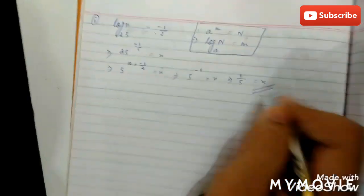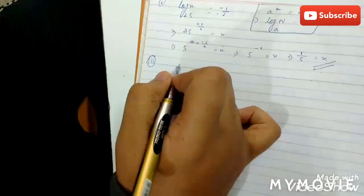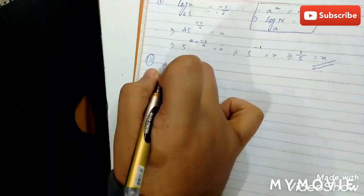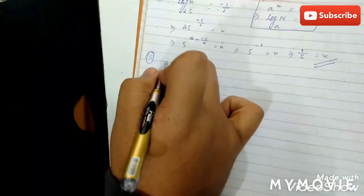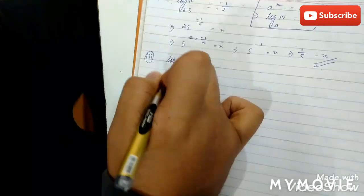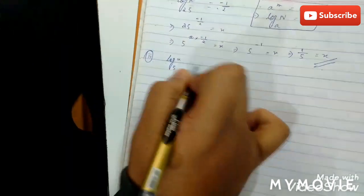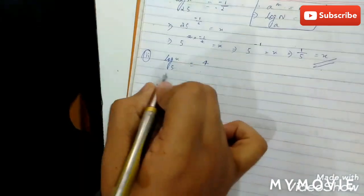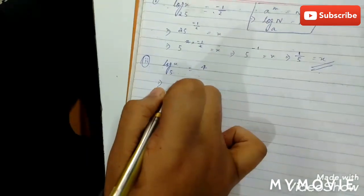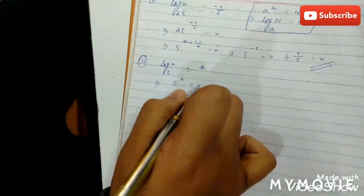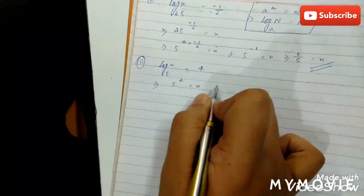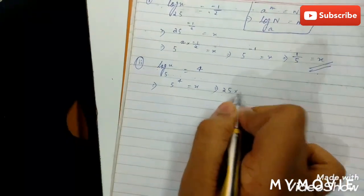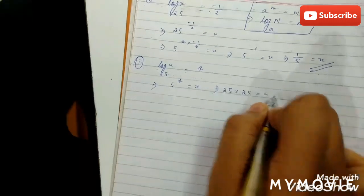Let us solve another sum to build our concept — the same type of sum. Log x to the base 5 equals 4. It implies 5 to the power 4 equals x. 5 to the power 4 can be written as 25 into 25 equals x.